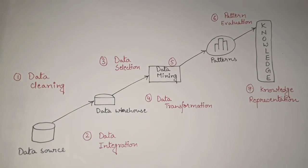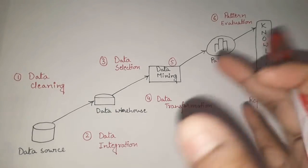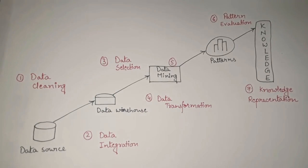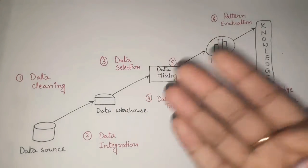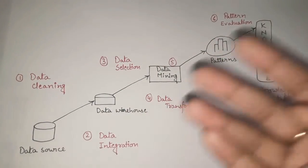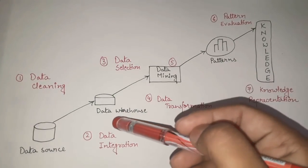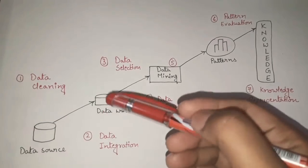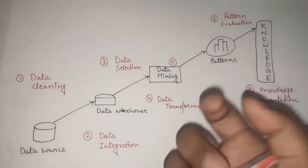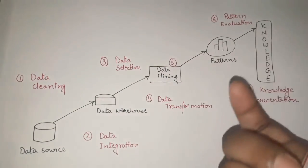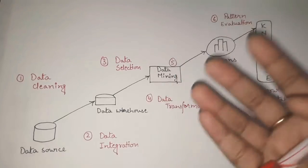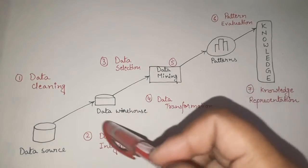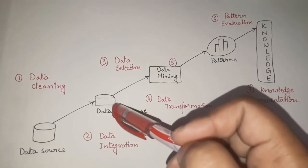After data cleaning, the second step is Data Integration. Data integration means we will be integrating or collecting the data. In this process it is possible we will encounter some issues or conflicts, so we use methods like correlation analysis to remove those conflicts. After integrating the data, we save it in the data warehouse — a storage where we can store our data.